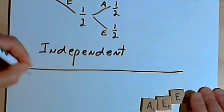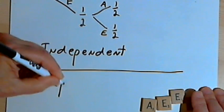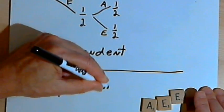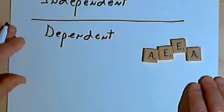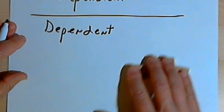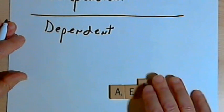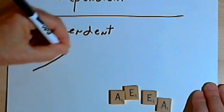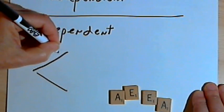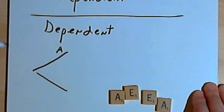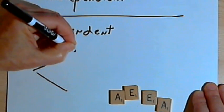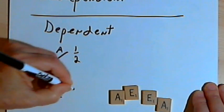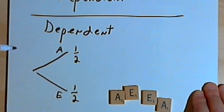Now let's see what would have happened if we played that game differently, with what are called dependent events. We would start out the same way — I would have the same four letters, put them in the bag, and randomly pick one. So my probability, once again, for getting an A is one-half, and my probability for getting an E is one-half.